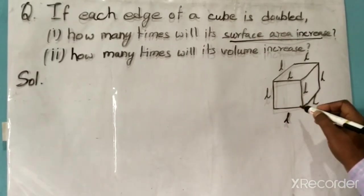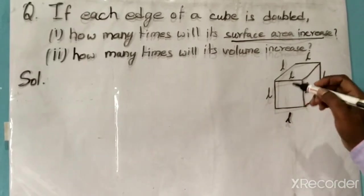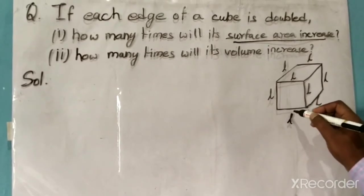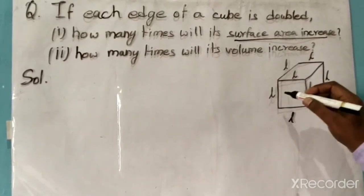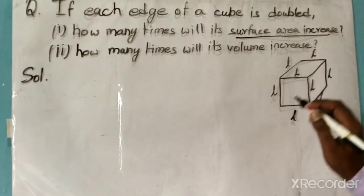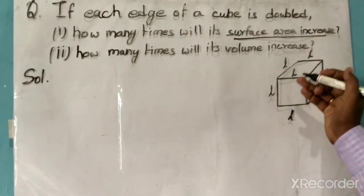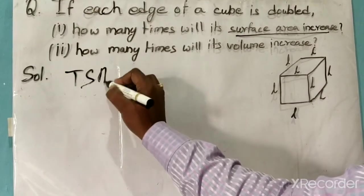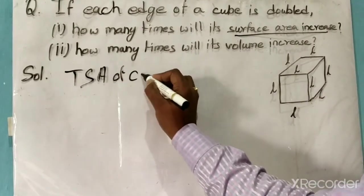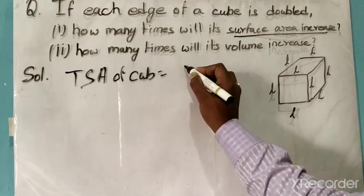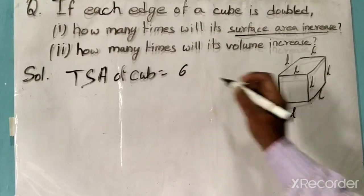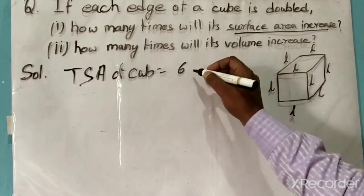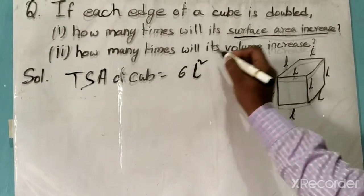First, how many times will the surface area increase? In a cube, you know that each edge is equal in length. Suppose I have taken each edge as L in length, so all the edges are L in length. The total surface area of the cube is equal to 6 times L squared, since there are 6 faces and each face's area is L squared.